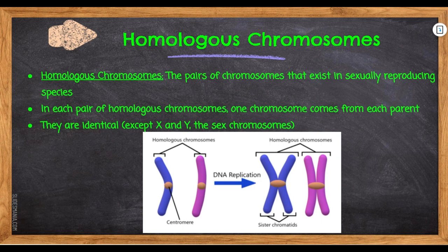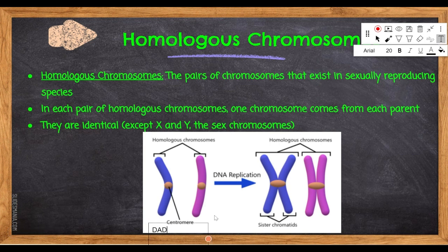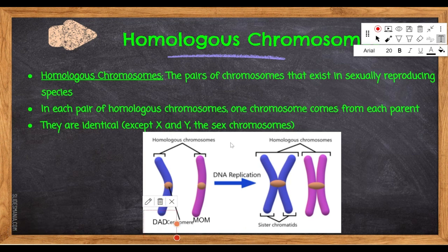Here's what a homologous chromosome is. Homologous chromosomes are the pairs of chromosomes that exist in sexually reproducing species. Here you have an example: let's say this blue one came from dad and this purplish one came from mom. So here is mom's chromosome and here is dad's chromosome. These homologous chromosomes — one came from the mother, one came from the father.